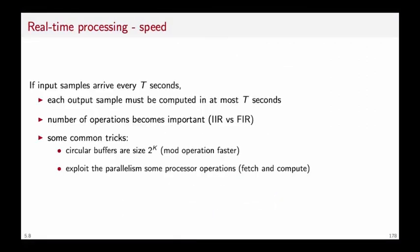Finally, a few words on real-time signal processing. So if the input samples arrive every capital T seconds, where capital T can be very, very small, for instance, in audio, capital T is typically 1 over 44,000 seconds, then each output sample must be computed in at most capital T seconds. So the number of operations becomes very important, and your choice of filter will depend on that, for instance, using an IIR versus an FIR. Some common tricks in applied signal processing is using circular buffers of size 2 to the power of k for a suitable value of k so that the modular operation is a simple bit mask. Or you can exploit the parallelism of some processors that allow you to fetch the data and compute a multiplication and addition in parallel in order to speed up the pipeline.